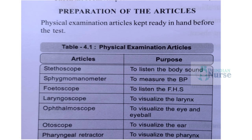The articles needed for physical examination are: Stethoscope — to listen to body sounds. Sphygmomanometer — to measure blood pressure. Fetoscope — to listen to fetal heart sounds. Laryngoscope — to visualize the larynx. Ophthalmoscope — to visualize the eye and eyeball. Otoscope — to visualize the ear.